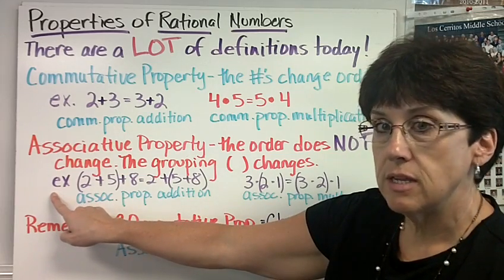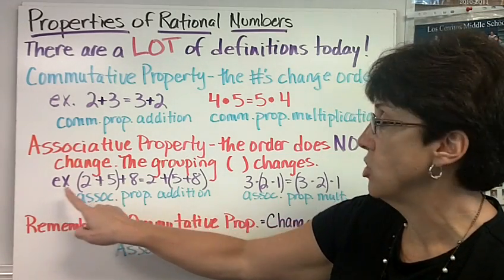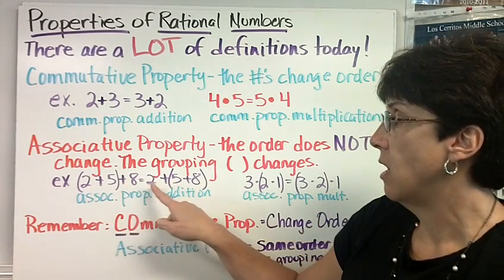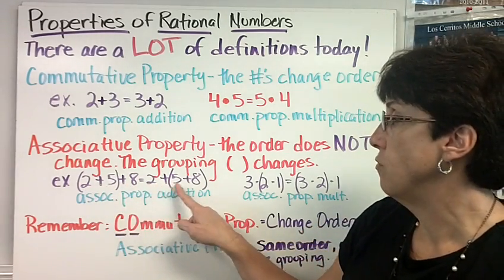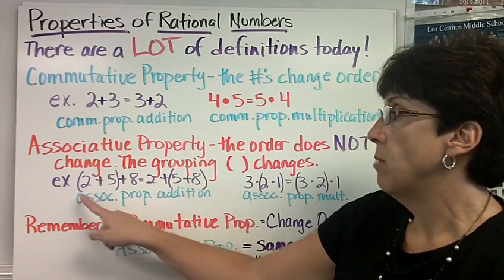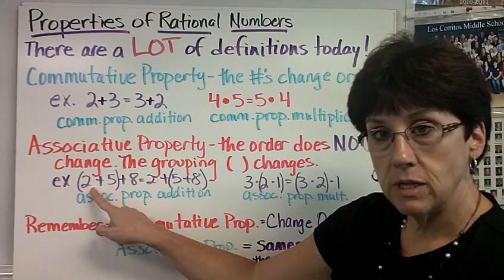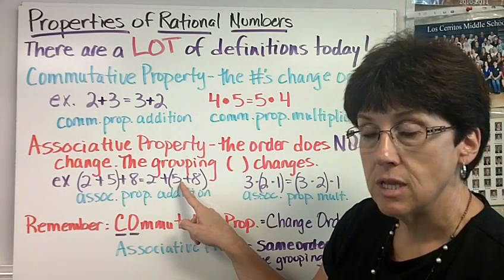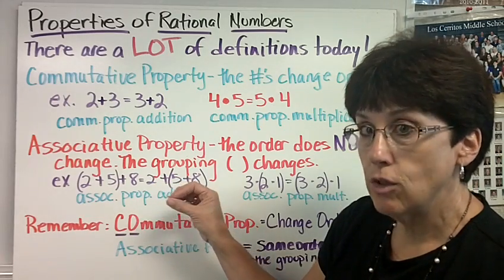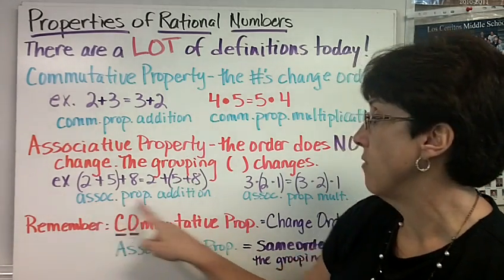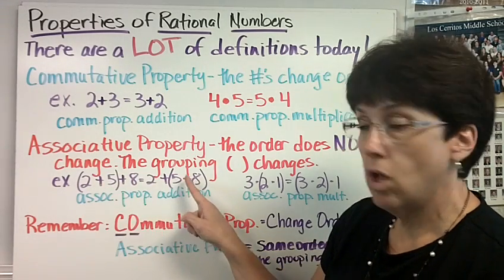Here's an example. First, let's just say the numbers so you can see that the order doesn't change. On this side: 2, 5, 8. On this side: 2, 5, 8. It didn't change like it did up here. But the grouping here, 2 plus 5 has the parentheses. Here, 5 plus 8 has the parentheses. So who we're adding together first changes.